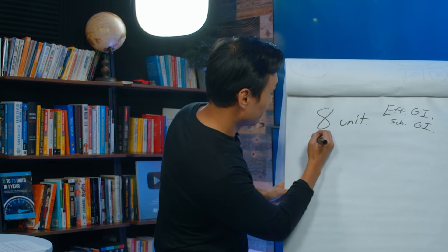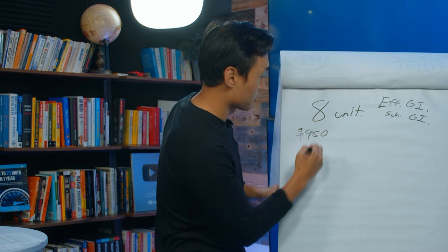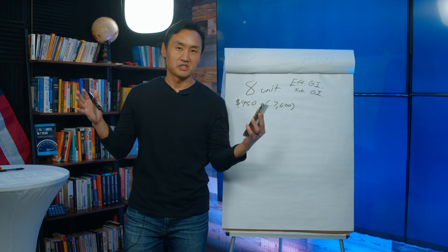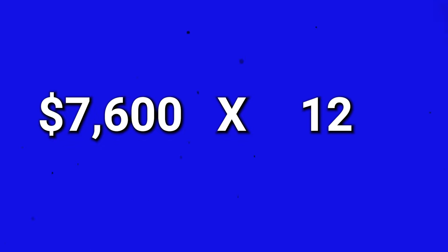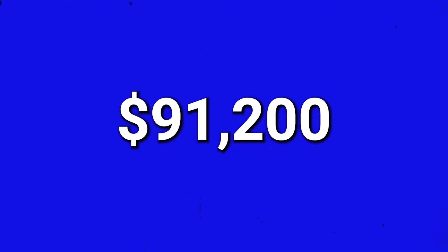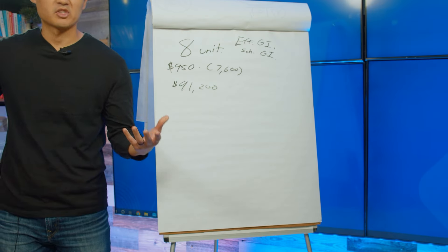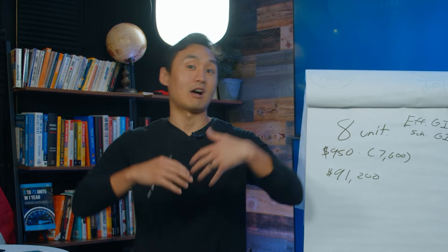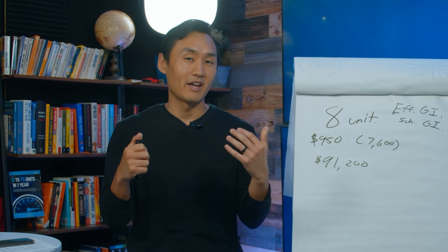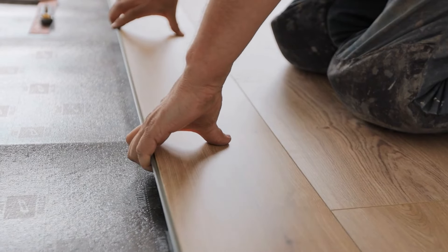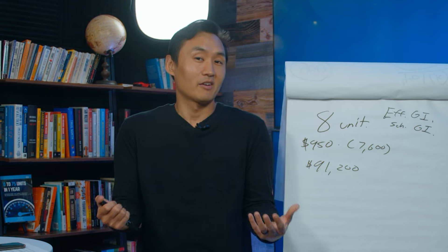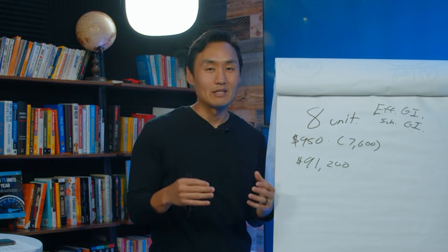With eight units rented at $950 each, the math is: 8 × $950 = $7,600 per month. Multiply by 12 months and that gives us $91,200 — that was our scheduled and effective gross income in the first year after stabilization. It actually took us a full 18 months to deal with all the property issues. We had to gut some units due to flooding, bring in dehumidifiers, and replace all the flooring, but by year one we were collecting $91,200.